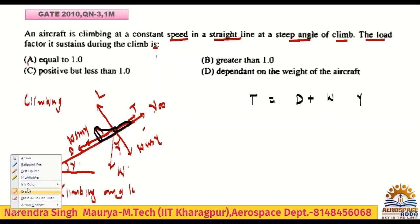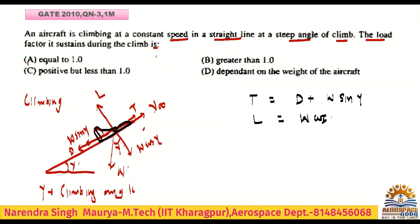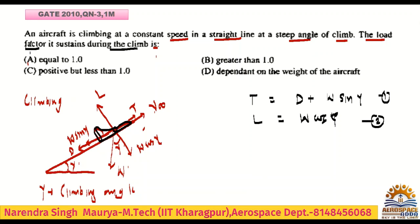Thrust equals drag plus the weight component W sin gamma. What is the lift force? It is the weight cosine component W cos gamma. This is equation number 1 and equation number 2. Now they are asking the load factor sustained during the climb.